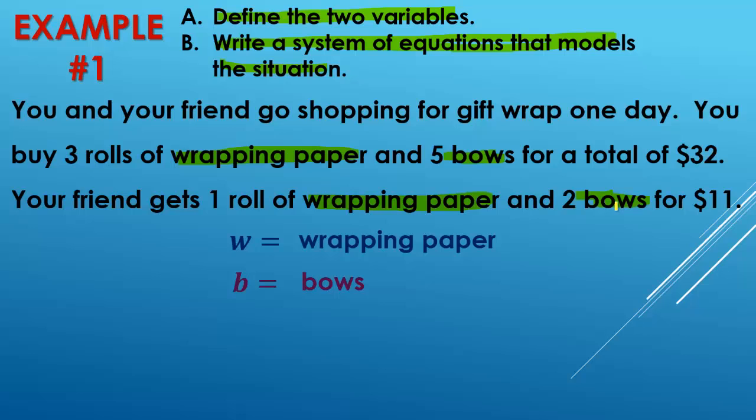All right. So, we bought three rolls of wrapping paper. So we'd say 3w. And then we also bought five bows. So that would be 5b. And we spent a total of $32. So it's equal to 32. So w and b are basically the cost of the wrapping paper and the cost of the bows.